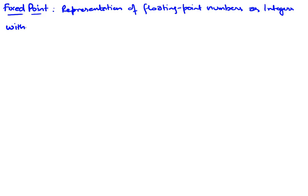In this video I will discuss the concept of fixed-point representation of numbers. A fixed-point number is simply a representation of floating-point numbers as integers with an implicit scaling factor, which is sometimes also referred to as the resolution.